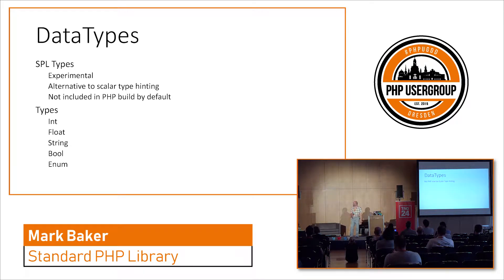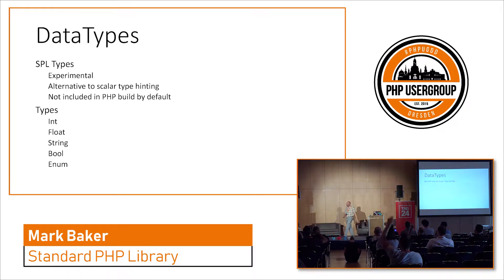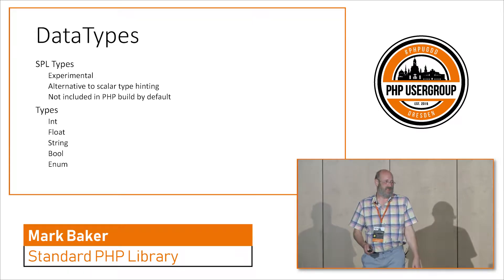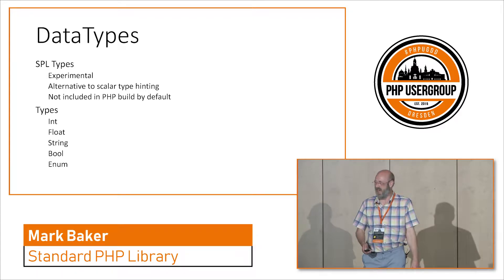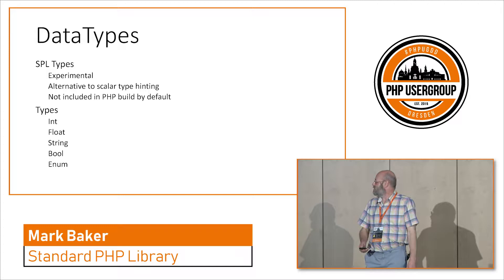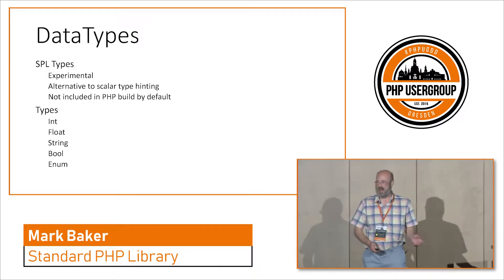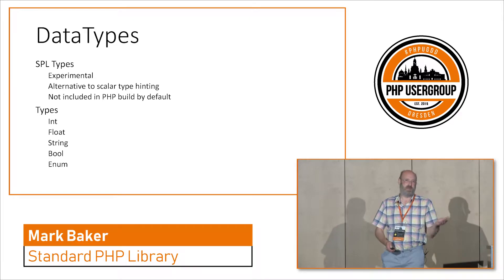PHP itself now has scalar type hinting, and there's a great show of hands of people using it. SPL could drop its data types completely and no one would care. PHP's own scalar type hinting is so much better, and we only had one hand go up when I asked who had even used the SPL data types.